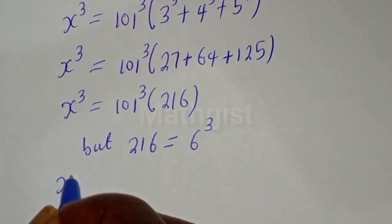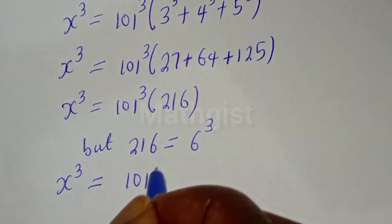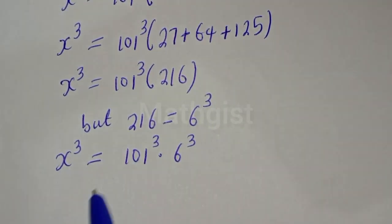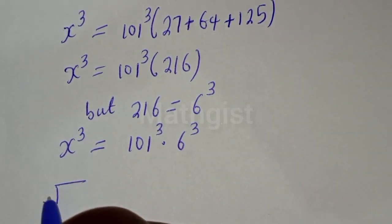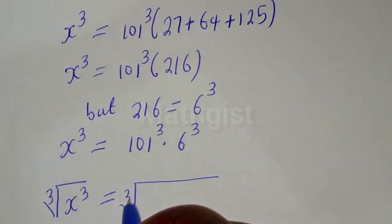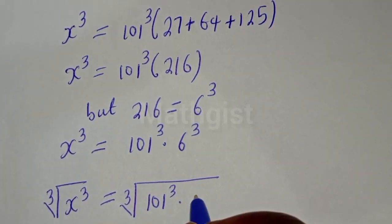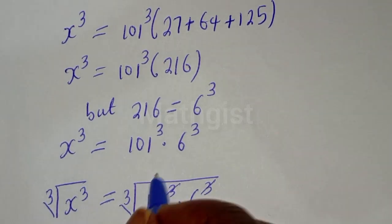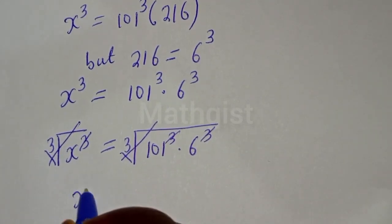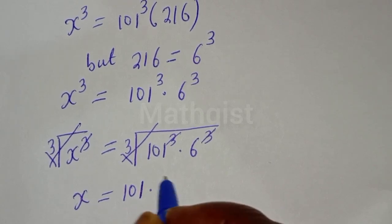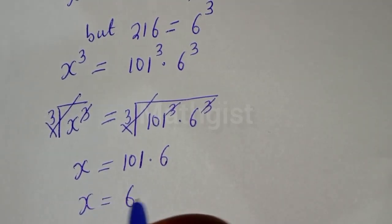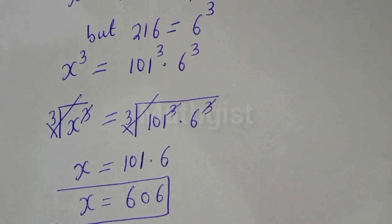Then S raised to power 3 is equal to 101 raised to power 3 multiplied by 6 raised to power 3. Now let's take the cube root of both sides of this equation. Cube root of S raised to power 3 is equal to cube root of 101 raised to power 3 multiplied by 6 raised to power 3. The cube roots cancel, giving S is equal to 101 multiplied by 6, which is 606. This is the final answer.